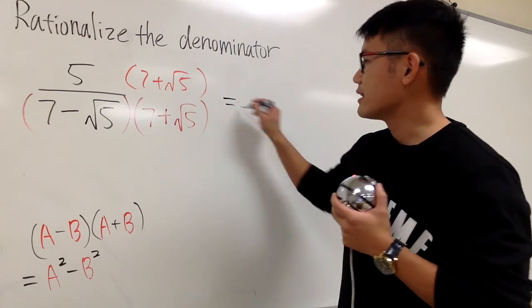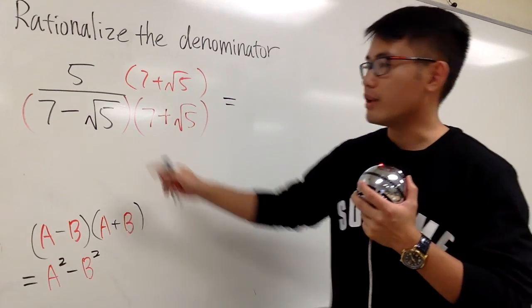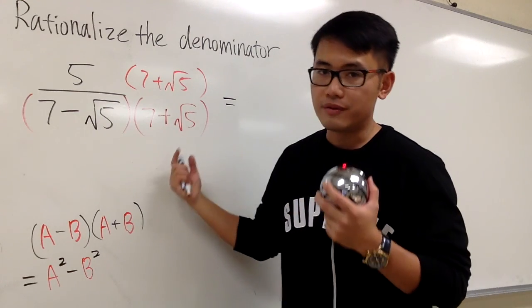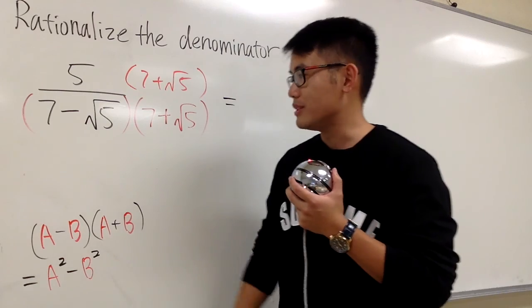So let's work out the bottom because that's the hard-to-do situation. And you can draw the arrows, do the foil, or you can use this formula. Let's use this.